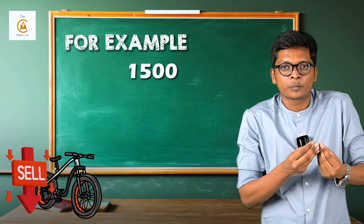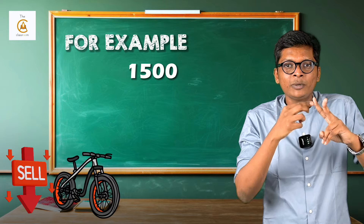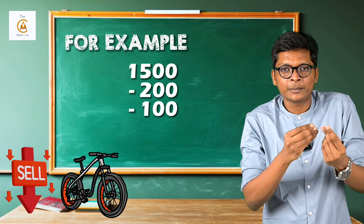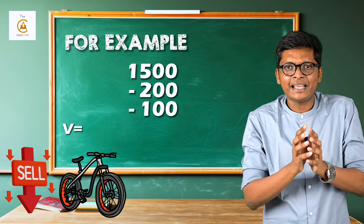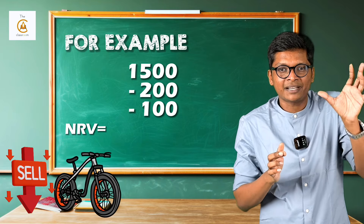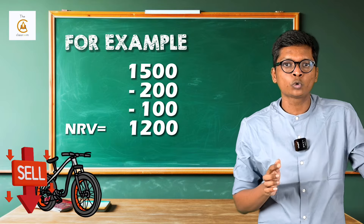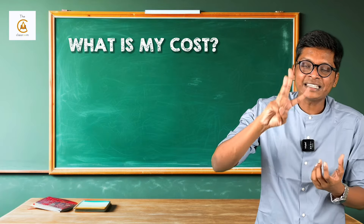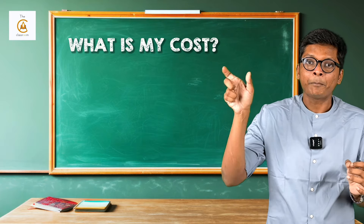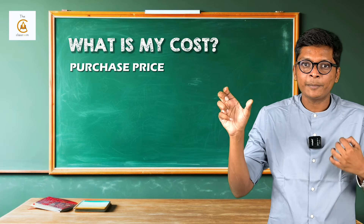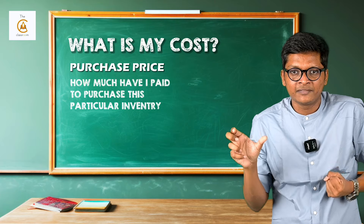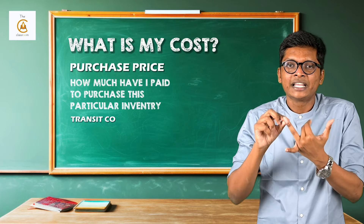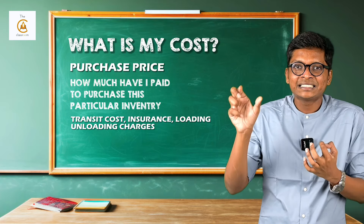NRV is net realizable value, which is nothing but estimated selling price — how much I will get if I sell something — minus two things: estimated cost of completion and minus cost necessary to make the sale. For example, if I am going to sell a cycle for 1500 rupees, less how much I will need to finish the cycle to make it in saleable condition — 200 rupees — minus 100 rupees commission. So my NRV will be 1500 minus 200 minus 100, which comes to 1200. This is my NRV.